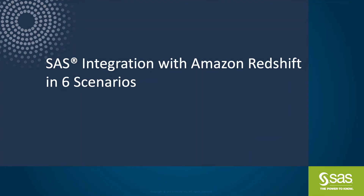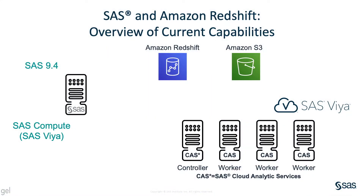In this video, I'm going to talk about the current integration capabilities between SAS and Amazon Redshift. The current versions of SAS at the time of speaking are SAS 9.4M6 and SAS Viya 3.5. SAS provides many ways to work with Amazon Redshift — using SAS 9.4, a SAS Compute Server in SAS Viya, or SAS Cloud Analytic Services, also known as CAS in SAS Viya, we will be able to work with Redshift data.